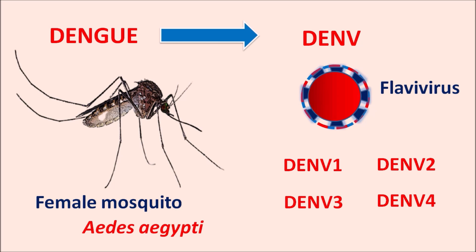When this female mosquito bites an infected person, it can carry this virus and act as a vector for transmission of the dengue virus. The viral cells enter into the mosquito and are located within the midgut, where they are replicated to produce new variants. These variants are then distributed to the salivary gland. In this way, the female mosquito acts as a vector for the dengue virus.